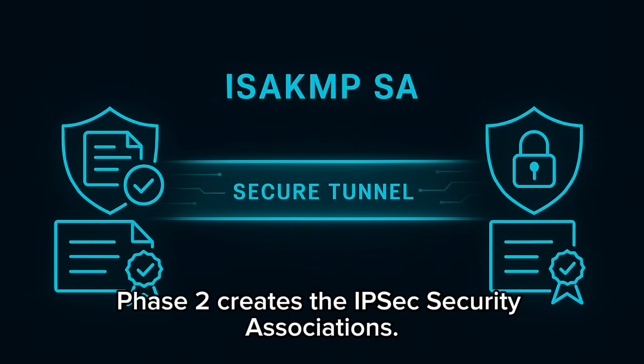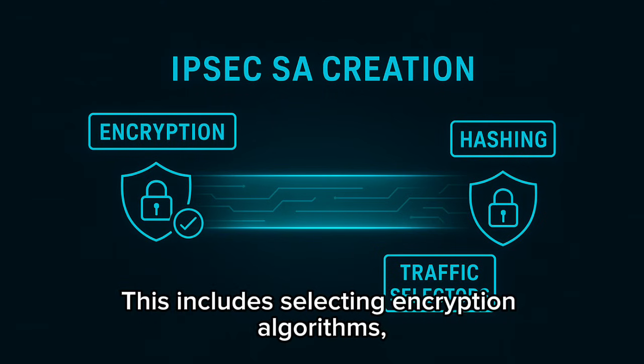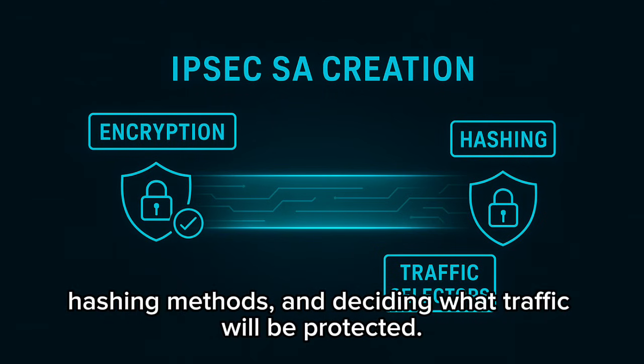Phase 2 creates the IPsec Security Associations. This includes selecting encryption algorithms, hashing methods, and deciding what traffic will be protected.